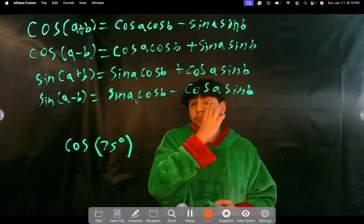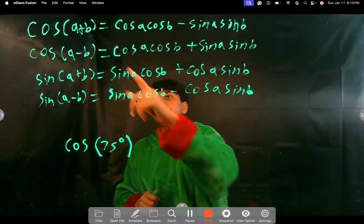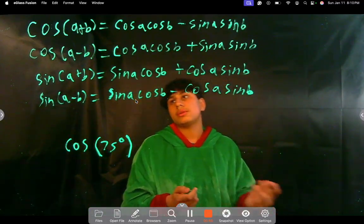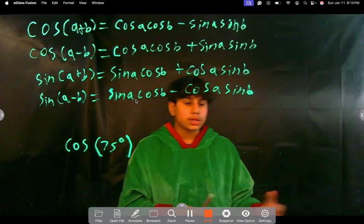We should call them sum and difference identities because, obviously, you can see here, you're adding a plus b here, you're doing a minus b, that's why there's sum and difference. And here we have them for cosine and sine, and tangent we'll get to later.